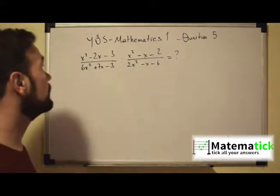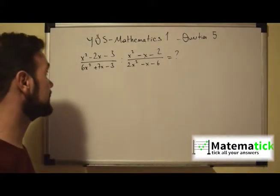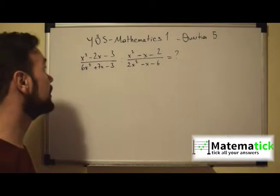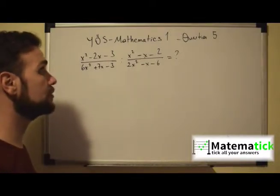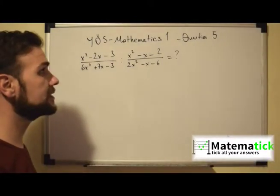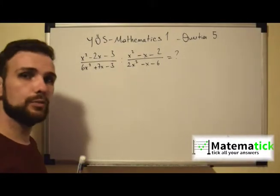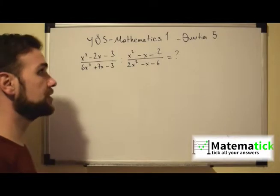In this question, we have (x² - 2x - 3) over 6, times (x² + 7x - 3), divided by (x² - x - 2) over (2x² - x - 6). So what do we do in these kinds of questions?